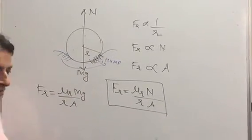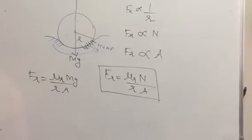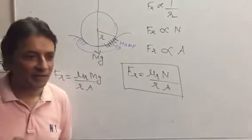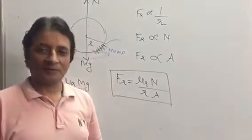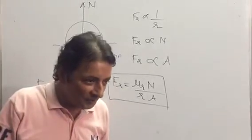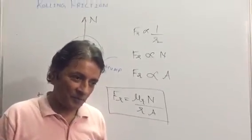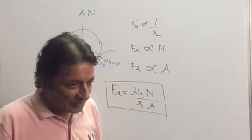So μR is the coefficient of rolling friction. The only difference between rolling friction and sliding friction is rolling friction depends upon area, sliding friction is independent of area. So you can see students, when we convert the rolling friction, then friction decreases.